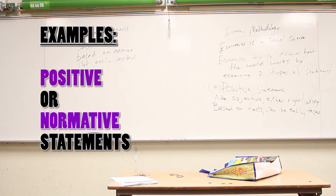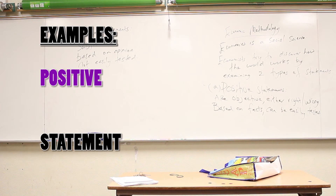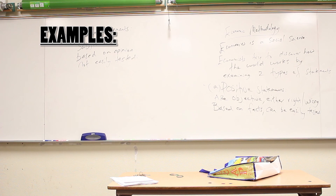Suppose I said: 'Unemployment in the United States is 2%.' That's a positive statement. It's a number — you can go back and fact-check it. Is unemployment actually 2%? No. But it's still a positive statement because positive statements can be right or wrong. You could go check the Bureau of Labor Statistics and see that the unemployment rate is closer to about 5.3%, meaning the original statement was wrong, and I'd have to concede. That's a positive statement.